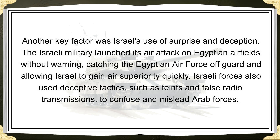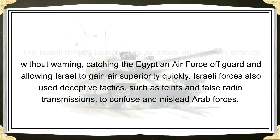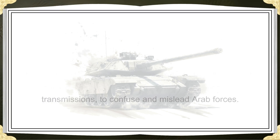Another key factor was Israel's use of surprise and deception. The Israeli military launched its air attack on Egyptian airfields without warning, catching the Egyptian air force off guard and allowing Israel to gain air superiority quickly. Israeli forces also used deceptive tactics, such as feints and false radio transmissions, to confuse and mislead Arab forces.